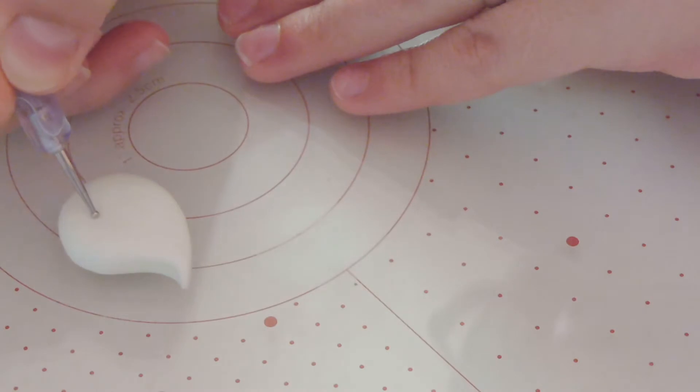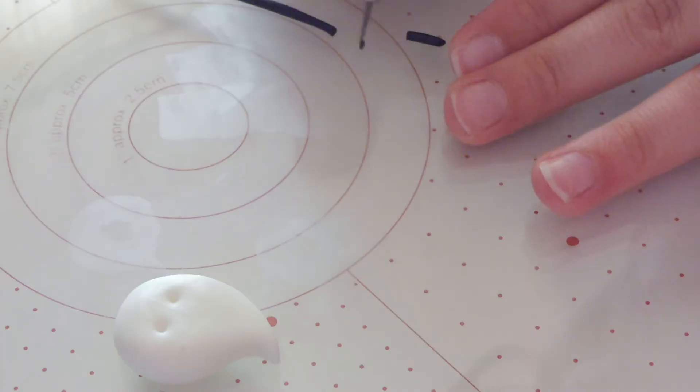Create the indents for the eyes. Taking the black clay, we're going to make two little balls for the eyes and a little smile.